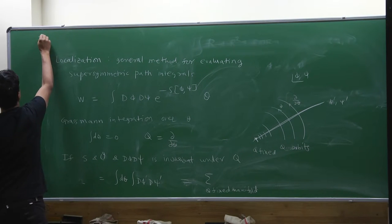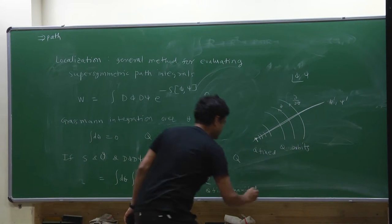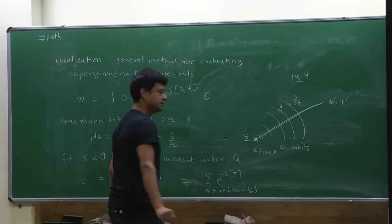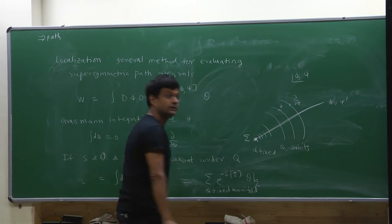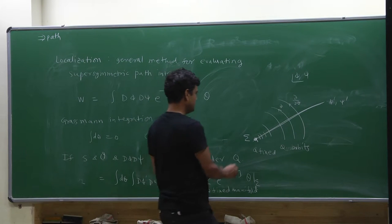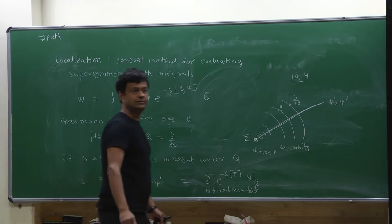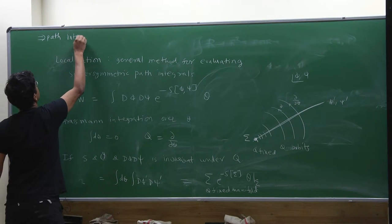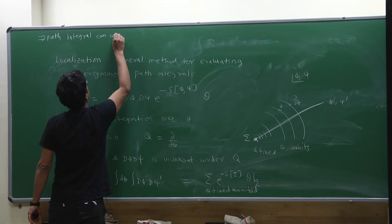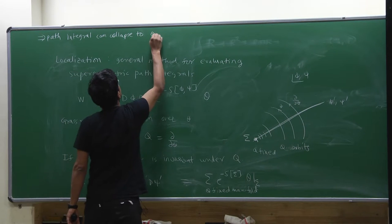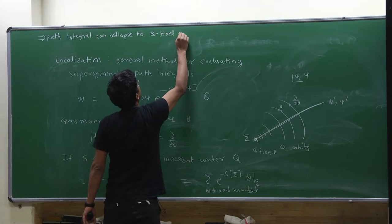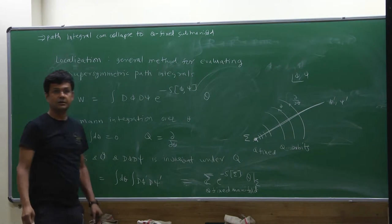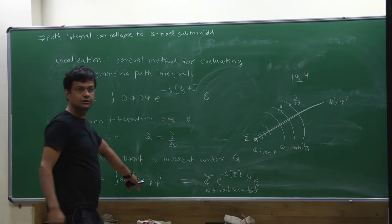Generically, what will happen is that Q will have fixed points. If Q has a fixed point, the whole path integral localizes onto that fixed-point sub-manifold, which we call σ. You just need to evaluate e^S on that sub-manifold σ and the operator on that sub-manifold. There can also be one-loop determinant corrections to take into account. Other than that, the path integral collapses to a sum over Q-fixed points, which can be a manifold — not necessarily a point. So when I write a sum, it could be an integral. It is still a smaller integral than the original one, and in fact, if you are lucky, in some cases the integral is just finite dimensional.